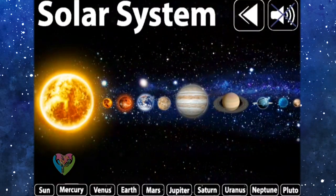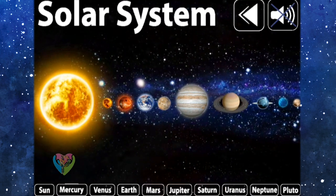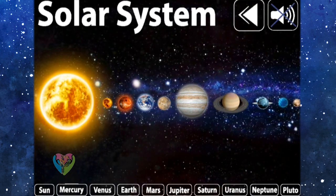The solar system is the planetary system of the Sun, which the Sun is the center of the planet.